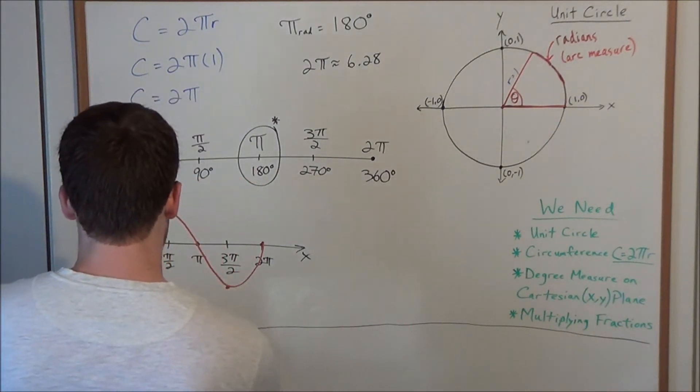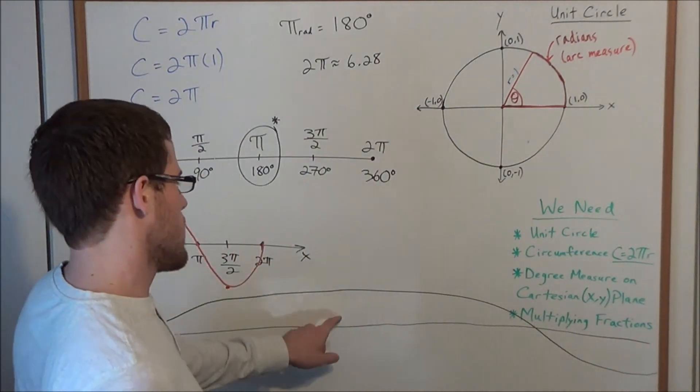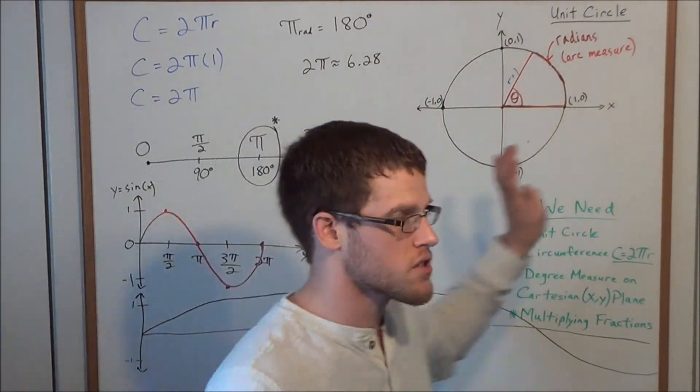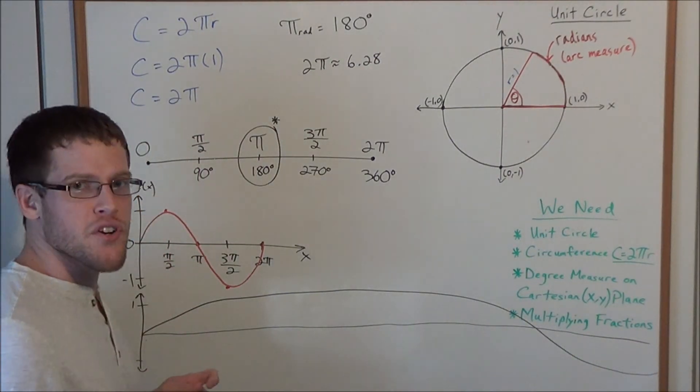And it would take on this really obnoxious loopy shape. And this is me being polite, like it would just really just go off the page. So at least for graphing the trigonometric functions, radians is the way to go.